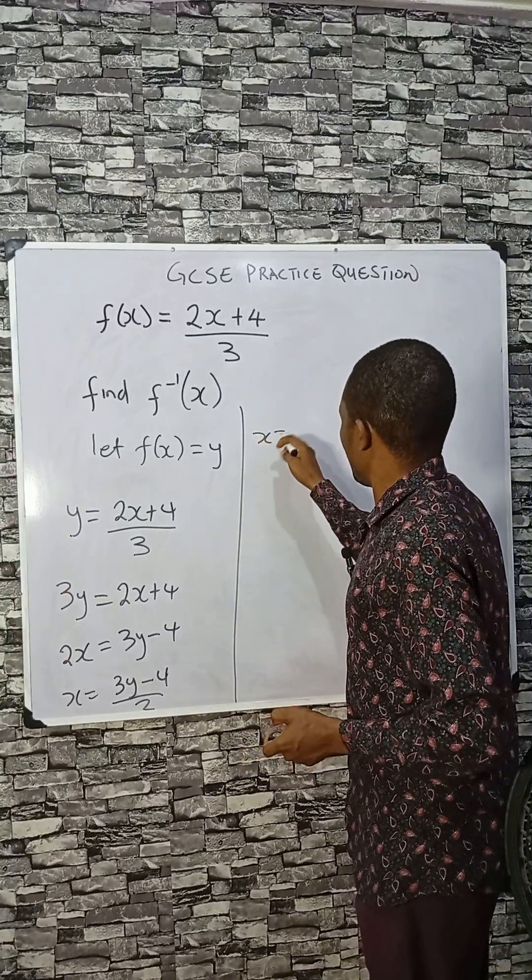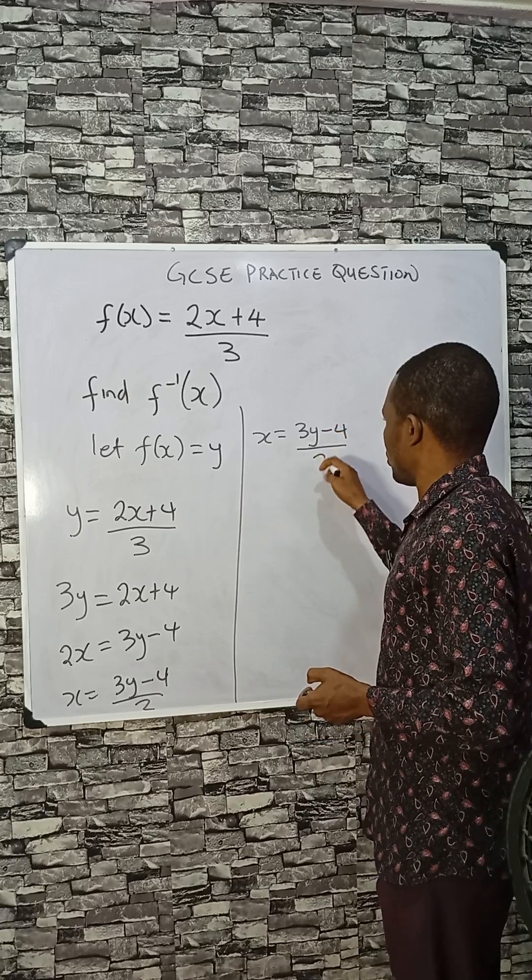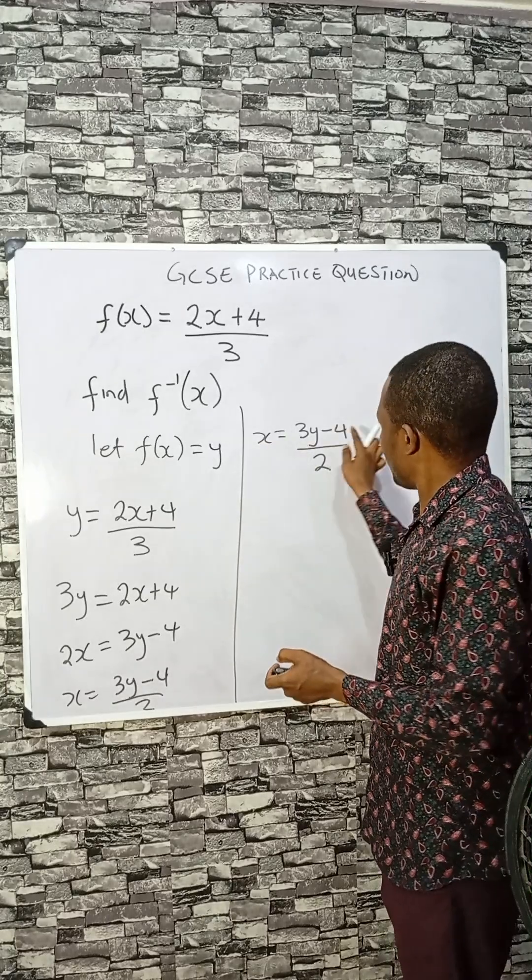x equals 3y minus 4 divided by 2. The next step: swap the positions of x and y.